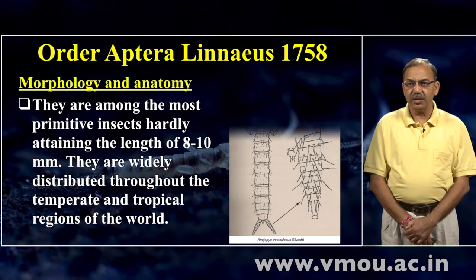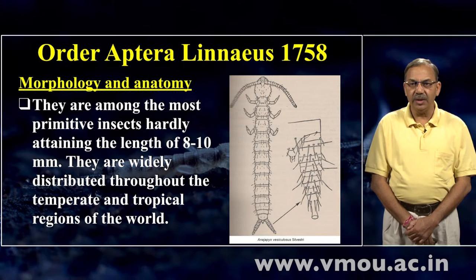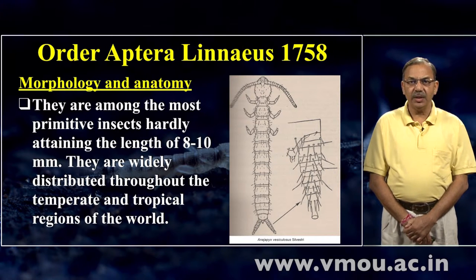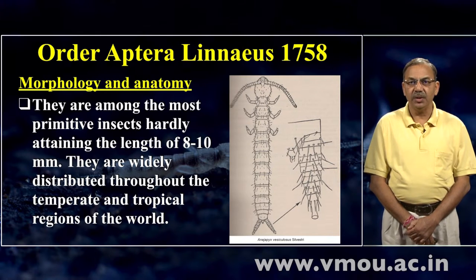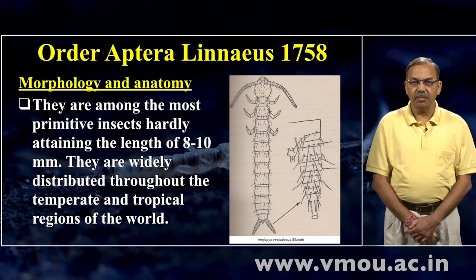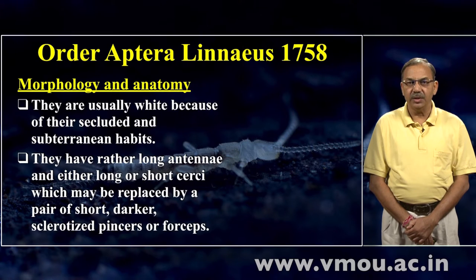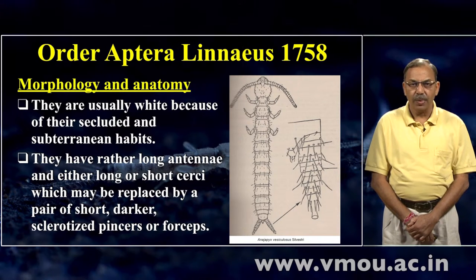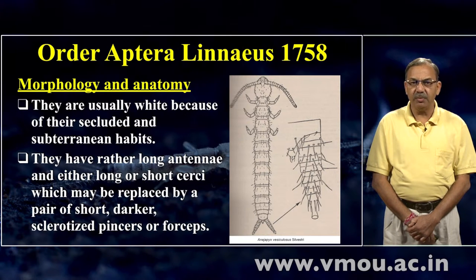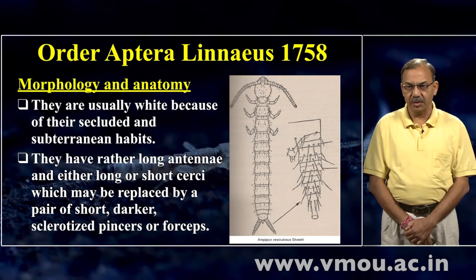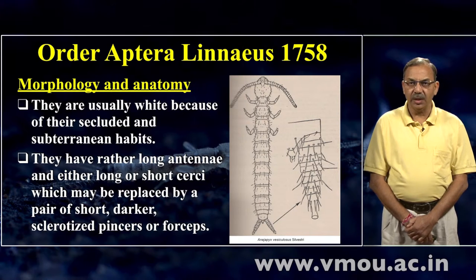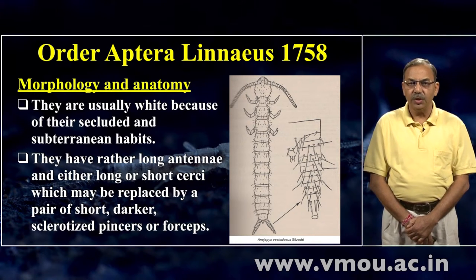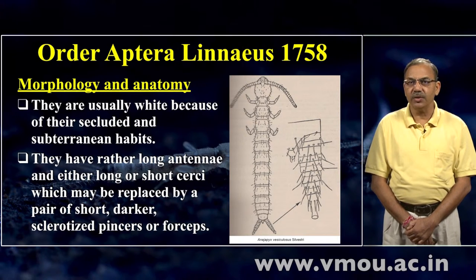Morphology and anatomy — right-hand की तरफ यहाँ पर एक species बनी हुई है और इसके structures विस्तारित दिखाई देते हैं। They are among the most primitive insects, hardly attaining a length of 8-10 mm. They are usually white because of their secluded and subterranean habits — क्योंकि ये जमीन के नीचे और छुपी हुई जगह जहाँ रोशनी नहीं आती, वहाँ रहते हैं, अतः इनका रंग लगभग पूरे शरीर का सफेद दिखाई देता है। They have rather long antenna — लगभग 25-30 segment या उससे अधिक — and either long or short cerci, which may be replaced by a pair of short, darker, sclerotized pincers or forceps।